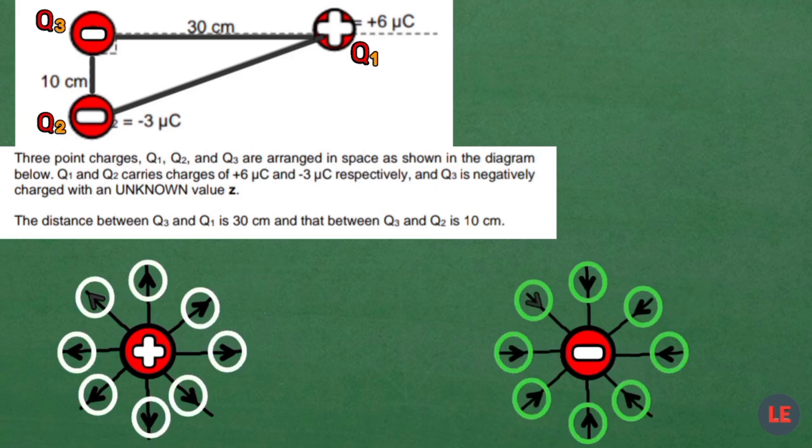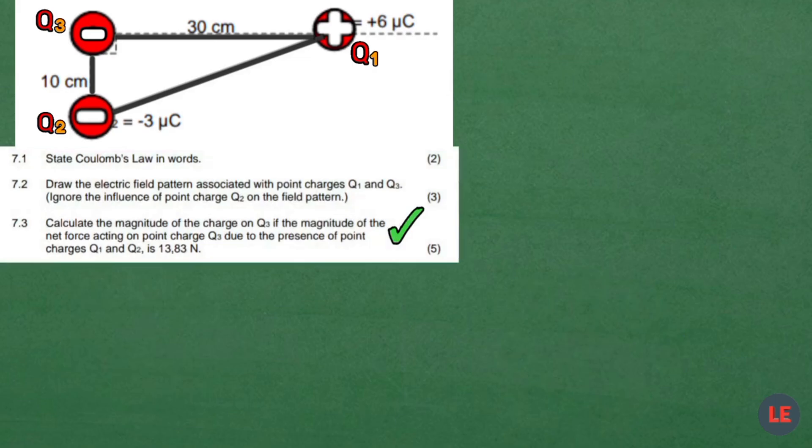The arrows are important to put them because they show the direction. We are instructed to calculate the magnitude of this charge Q3. Bear in mind that the net force is given to be 13.83 newtons.